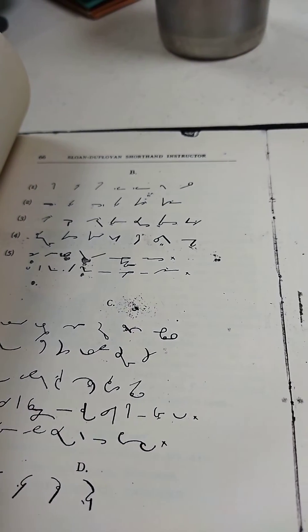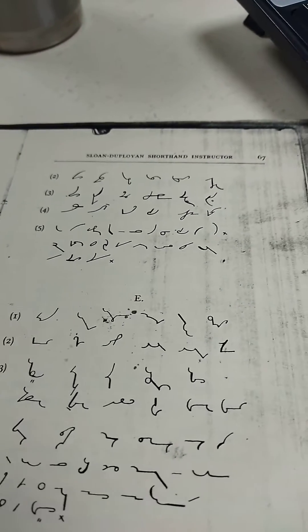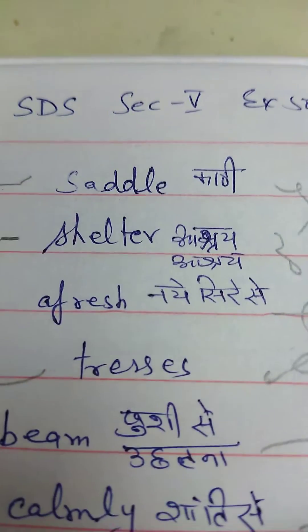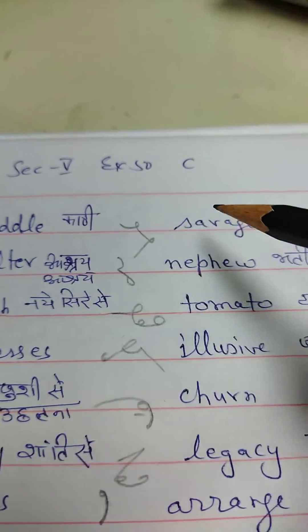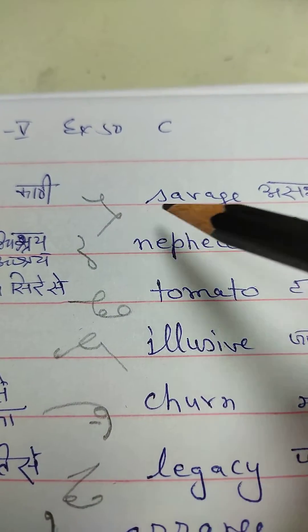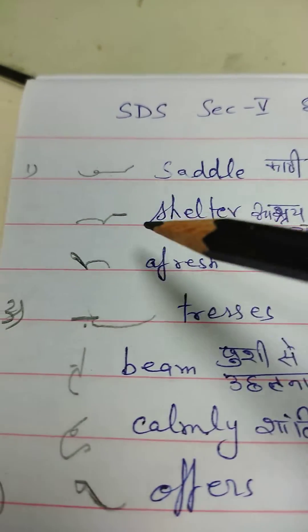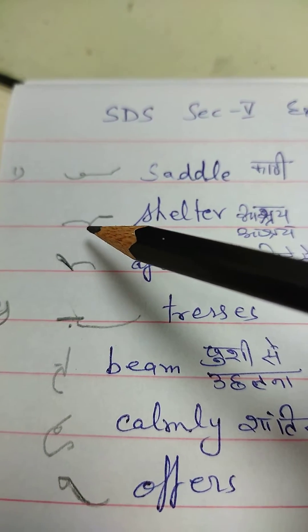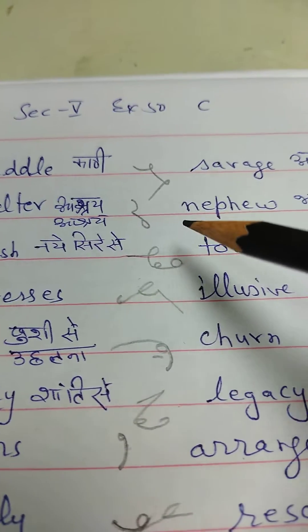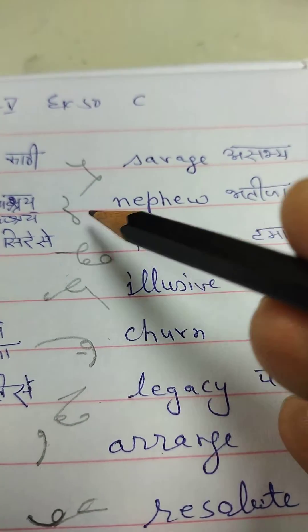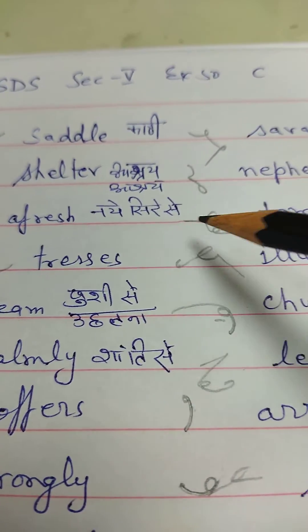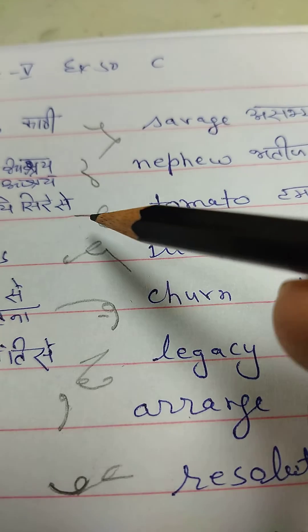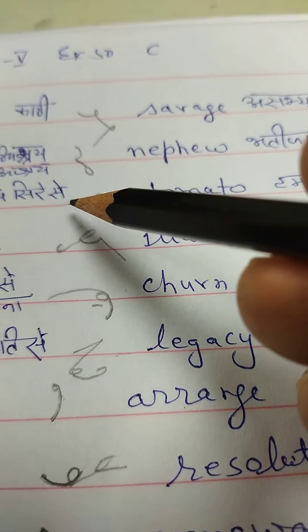Here it is: saddle, kathi, savage, asamne, shelter, ashraya, nephew, matija, a fresh, daisias, doma, tomato.